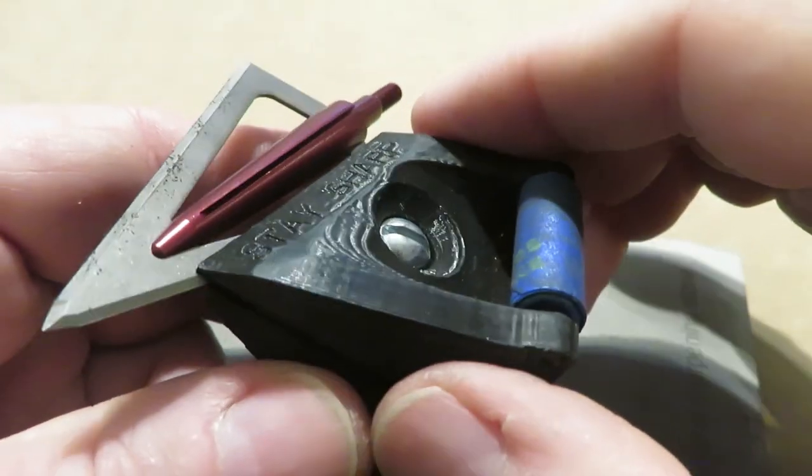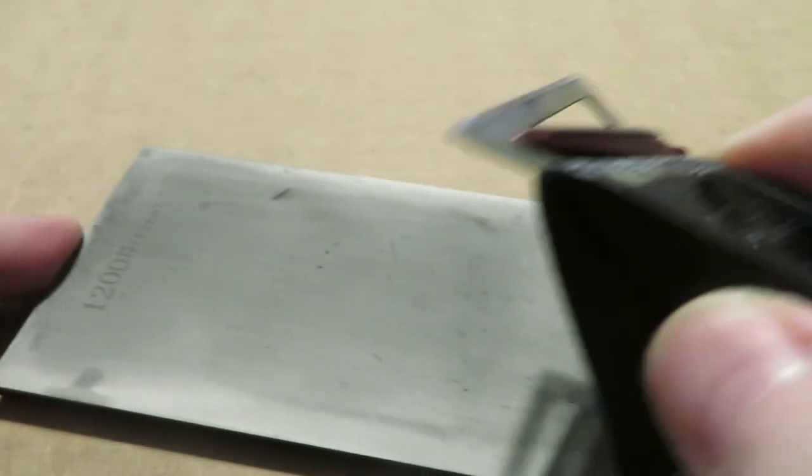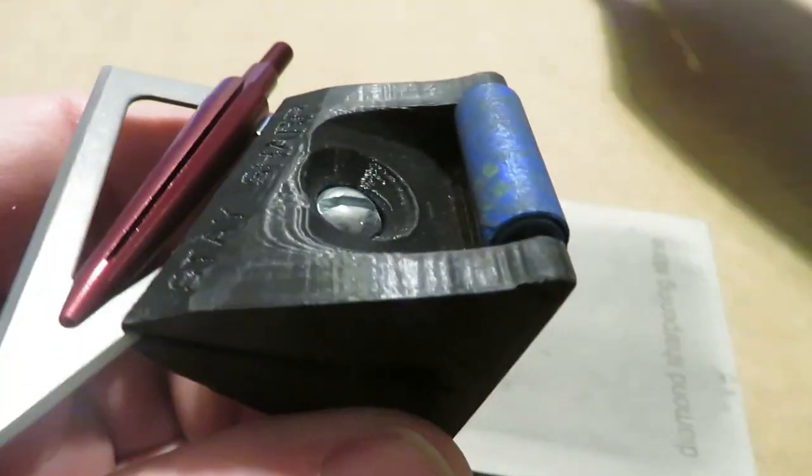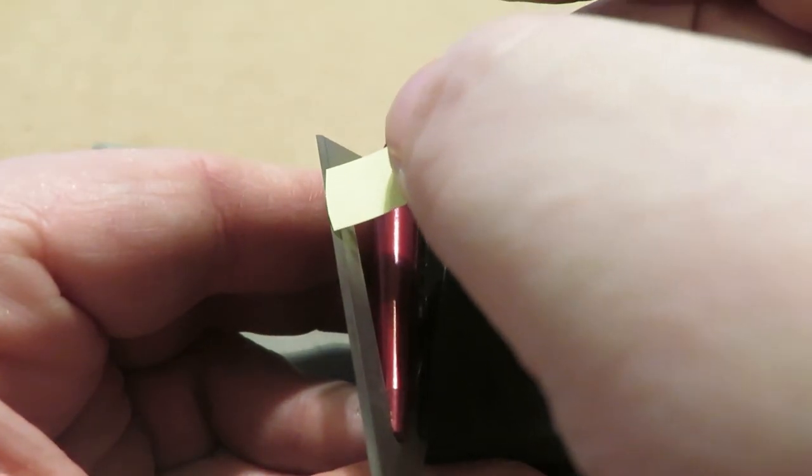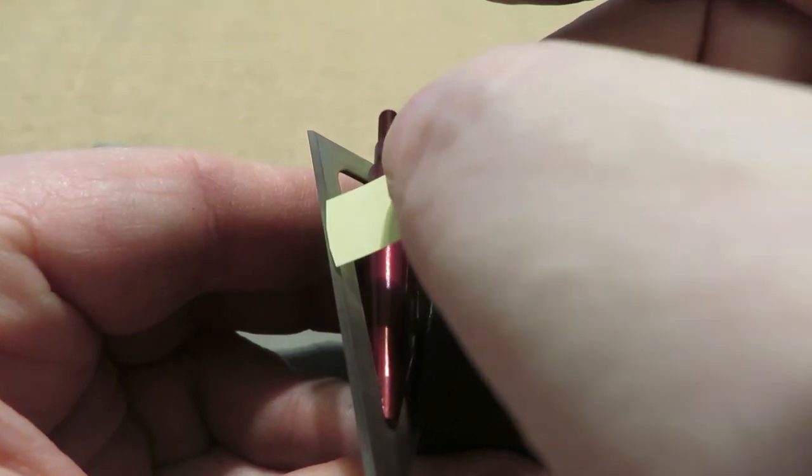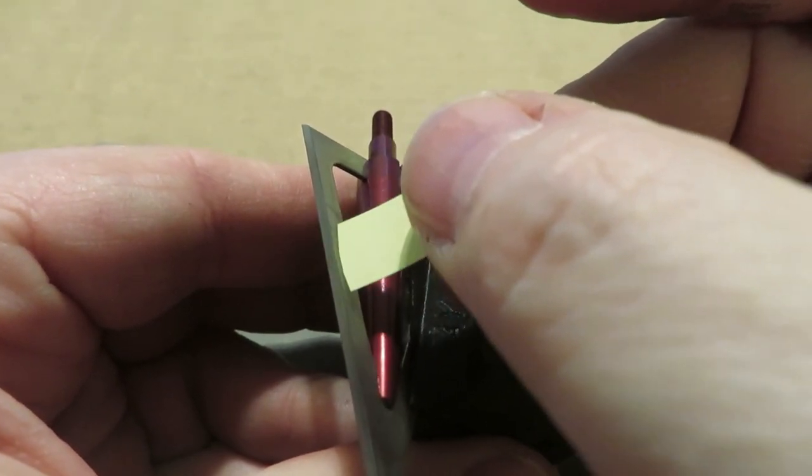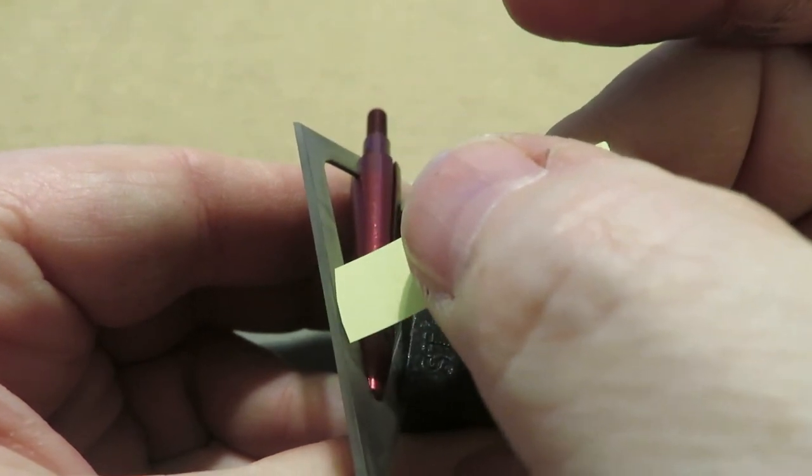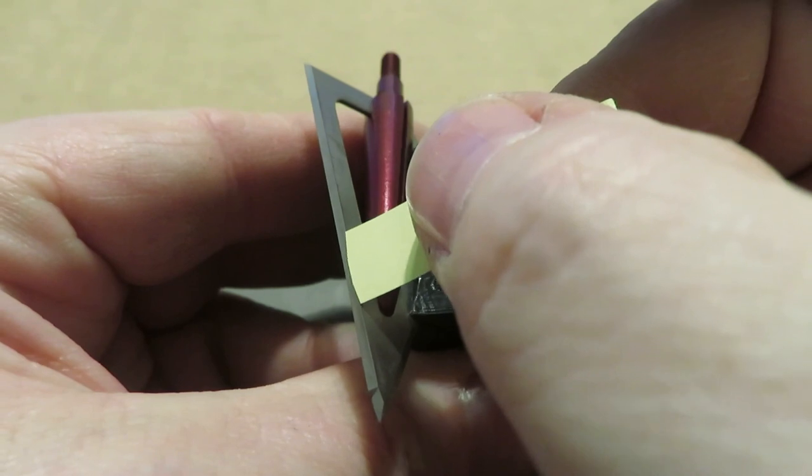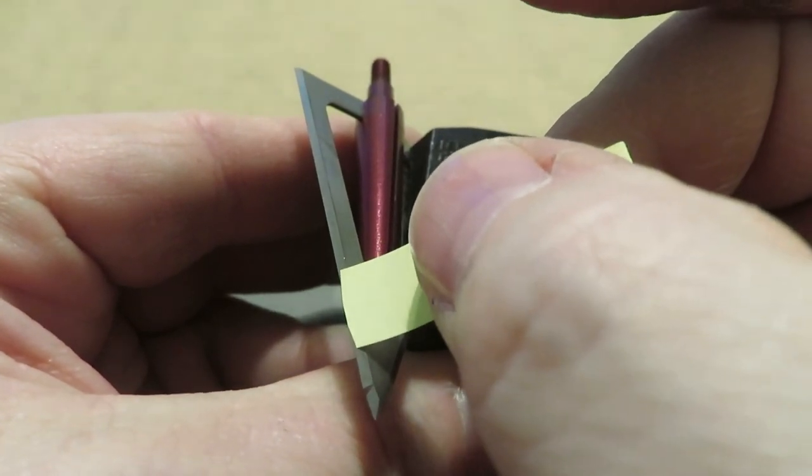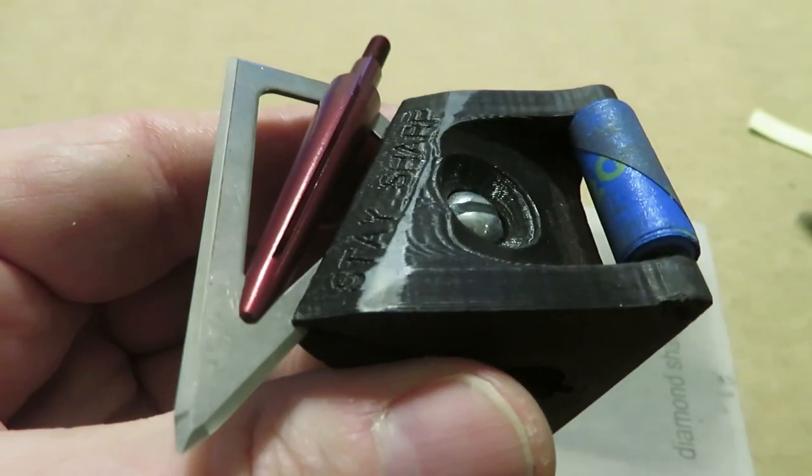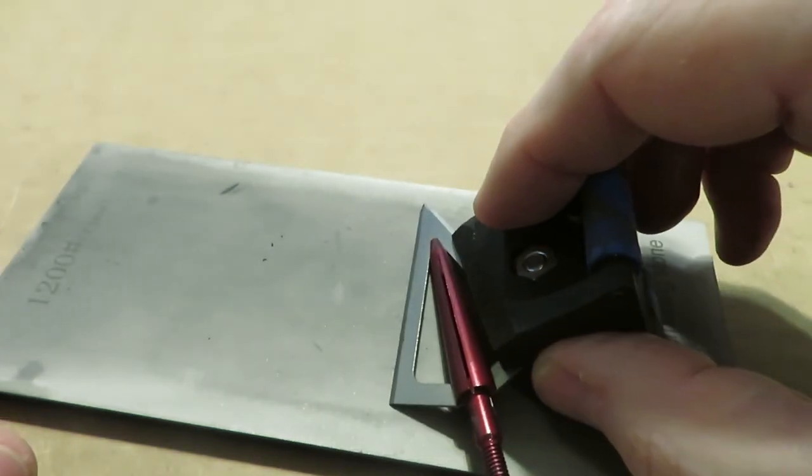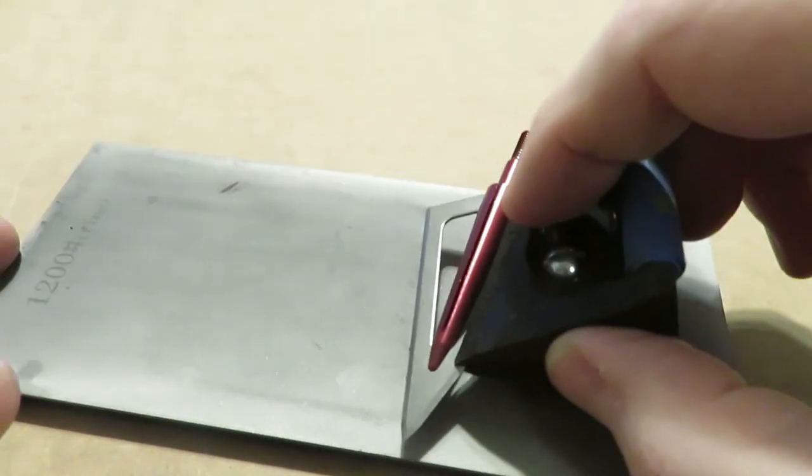All right, we're on our second burr of 1200 grit. Now it's time to check to see that we've achieved that burr. Again, when the paper catches and flexes and pops, we know we've reached a burr along the entire edge, and it has to be along the entire edge. Don't just get a burr here and nothing here, then this won't be sharp and this will. So now we've achieved two burrs at 1200, we'll go and chase those away.